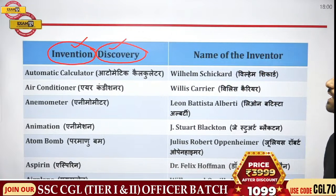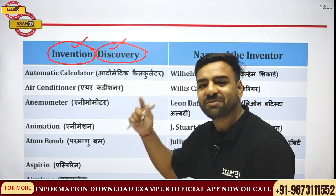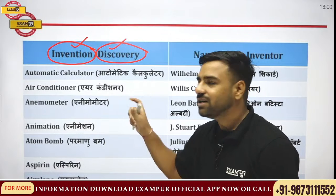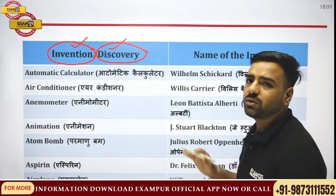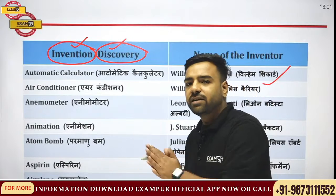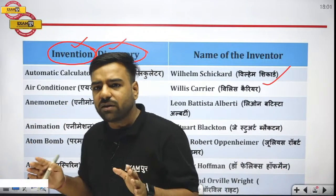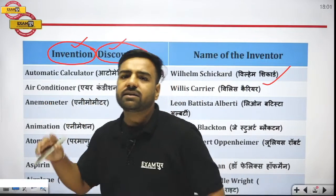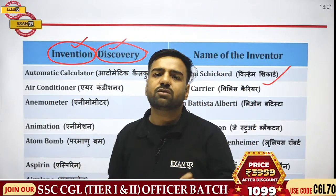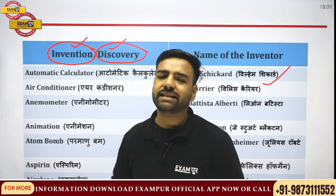First of all, if I talk about the automatic calculator — who was the one who invented this? It is an invention, not a discovery. The automatic calculator was invented by Wilhelm Schickard. There are many things which can be easily remembered with a trick, and wherever we can apply a trick we will be doing that.